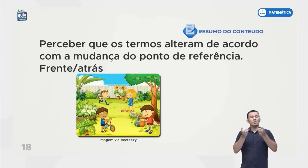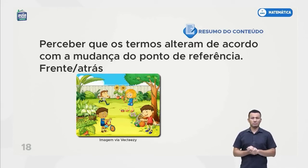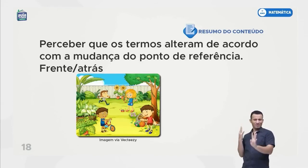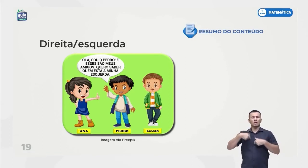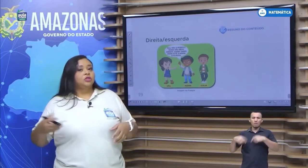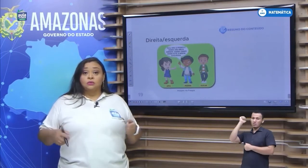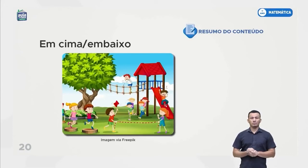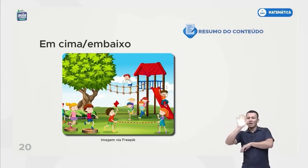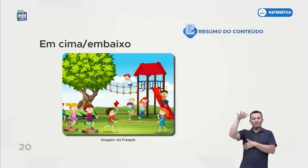Perceber que os termos alteram de acordo com a mudança do ponto de referência: frente, atrás. Tem crianças brincando na frente, tem crianças brincando atrás — é igual na fila, às vezes a gente está na frente, outras estão atrás, no meio. Direita, esquerda — para eu saber que estou na direita ou esquerda do meu coleguinha, eu tenho que saber a minha posição. Em cima, embaixo — o coleguinha está em cima gritando 'Ei!' para o coleguinha lá embaixo escutar.